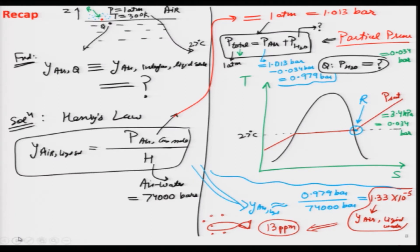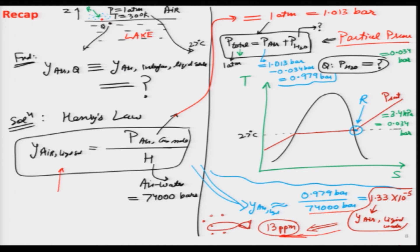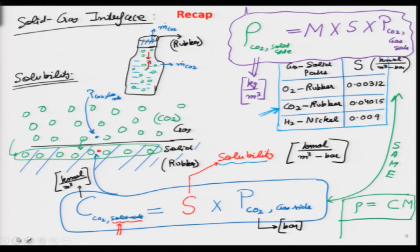We also solved for how much air can be dissolved in water under normal conditions using the lake example. Using the T-S diagram, we calculated the partial pressure of water, subtracted it from total pressure to get the partial pressure of air, and applied Henry's constant for air in liquid water to find the mole fraction of air in water. This phenomena is what allows aquatic animals like fish and other marine animals to breathe while they are inside the water.